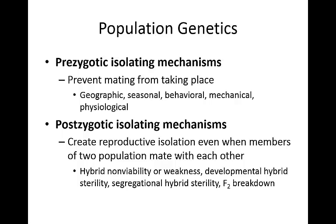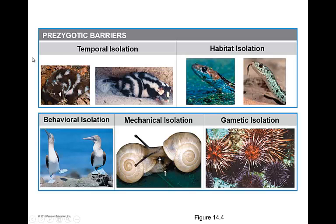In postzygotic isolating mechanisms, this would create reproductive isolation even when two populations manage to mate with one another — their offspring either are not going to be born or they may not be very strong, and they themselves may not be able to reproduce. An example of a prezygotic barrier is temporal isolation: one organism might be active during the day, one might be active during the night, and they will physically never find one another if they're not active at the same time.